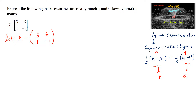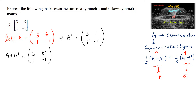Let us find A transpose, which is obtained by interchanging the rows and columns. So we get 3, 1, 5, and minus 1. Now A plus A transpose equals [3,5;1,-1] + [3,1;5,-1], which gives 6, 6, 6, and negative 2.